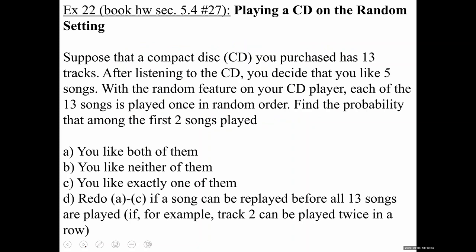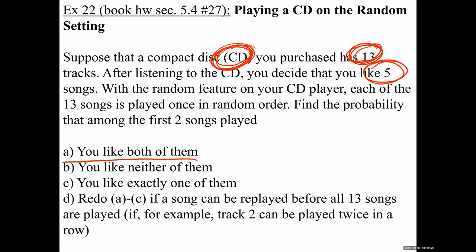Example 22: Suppose that a compact disc you purchase has 13 tracks. After listening to the CD you decide that you like five songs. So five of them you like, there are 13 total, and there are eight you don't like.